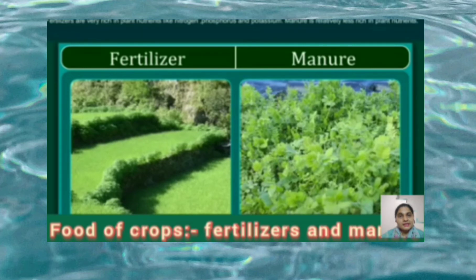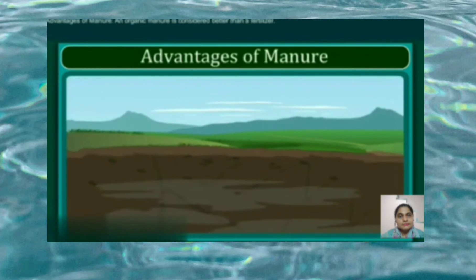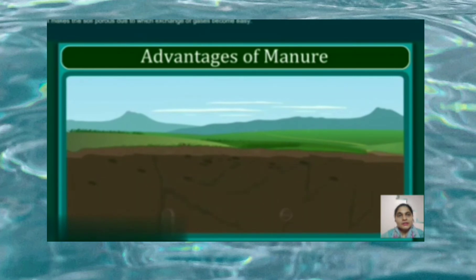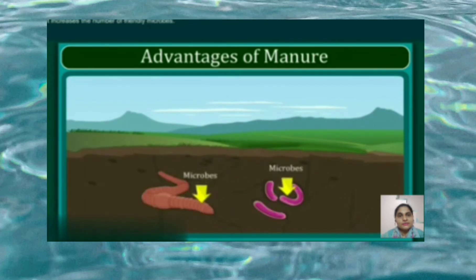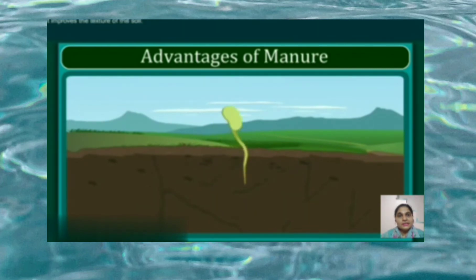Fertilizers are very rich in plant nutrients like nitrogen, phosphorus, and potassium, while manure is relatively less rich in plant nutrients. Organic manure is considered better than a fertilizer because it enhances water retention, makes the soil porous so exchange of gases becomes easier, increases the number of friendly microbes, and improves the texture of the soil.